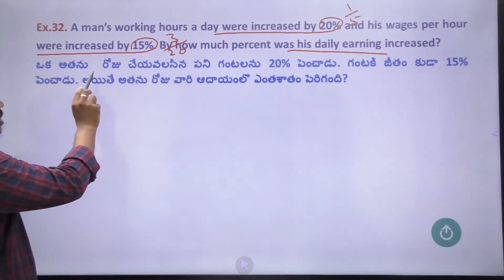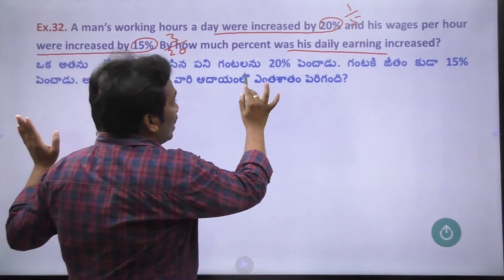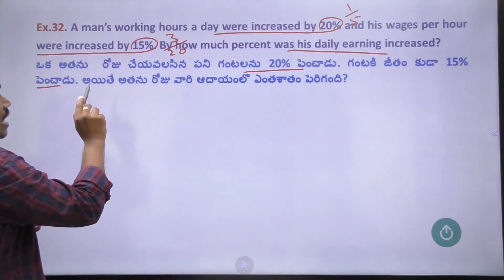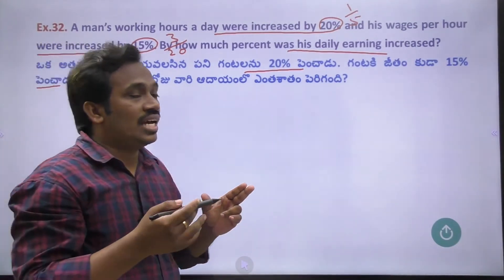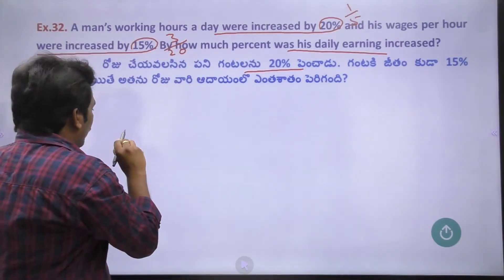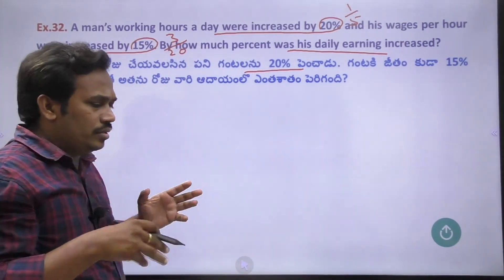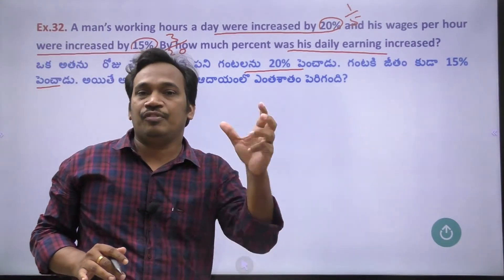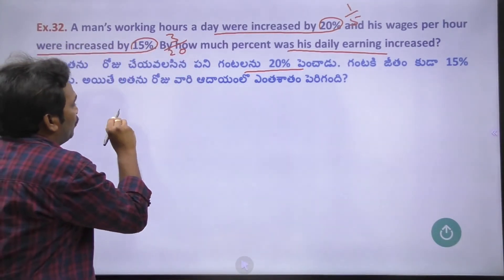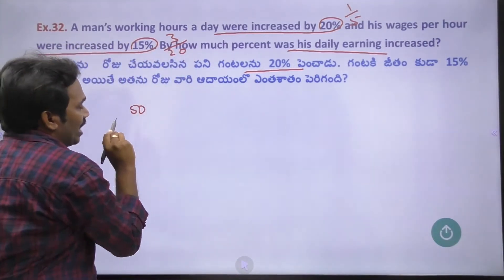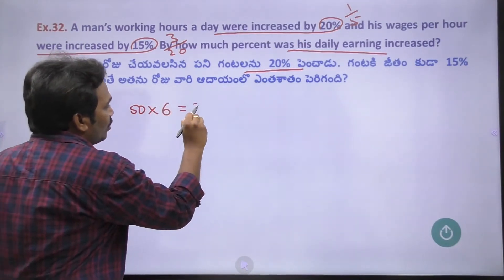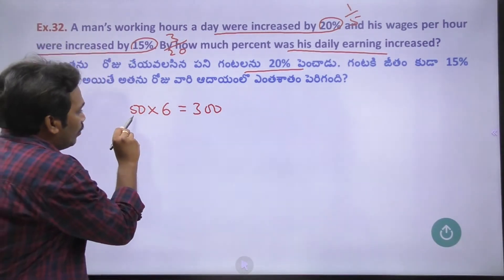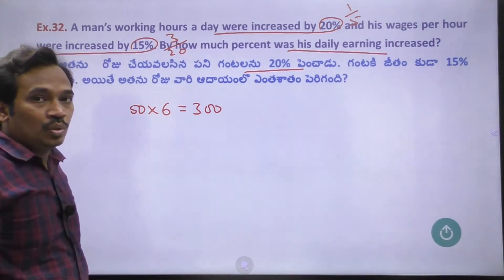Think of it this way: you work for a certain amount per month, and you earn so much per day. The formula is: money per hour multiplied by number of hours equals total money.